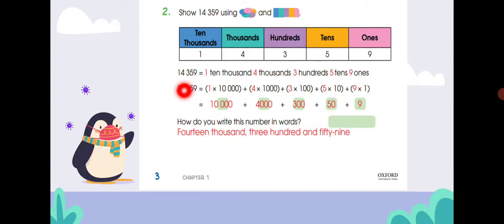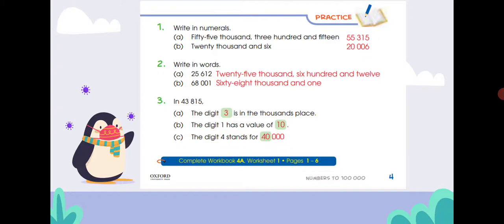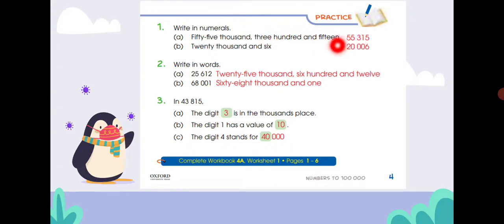So how do you write this number in words? Fourteen thousand three hundred and fifty-nine. Now we have page number four from your textbook — write in numerals. We have words and we have to write the numbers. Fifty-five thousand three hundred and fifteen. Twenty thousand and six.